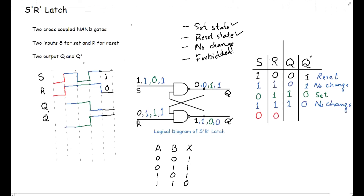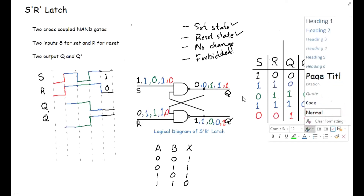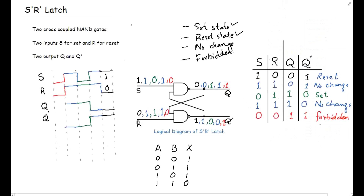Finally, if we apply S=0 and R=0 at both inputs, what will happen? When the input is 0, the NAND gate output will always be 1. So both Q and Q' become 1. Keep in mind, as we discussed with the SR latch, this is the Forbidden state of the S̄R̄ latch.